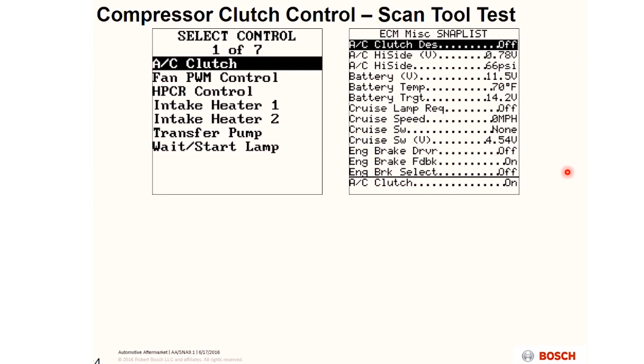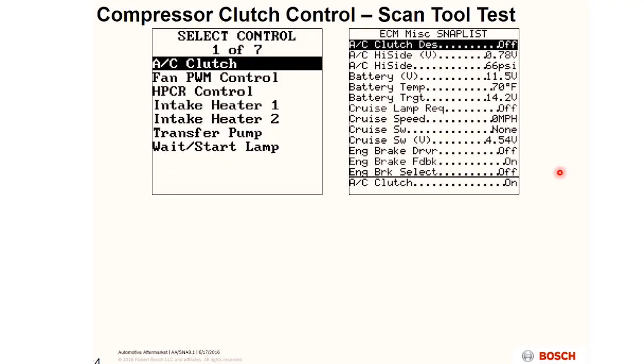A lot of times what you can do with your bidirectional control is listen for things. The AC clutch is generally a pretty easy one — I go find the bidirectional control, I command the AC clutch on, and then I listen: did I hear it click? In this particular case, the position is on, and then I would go out there for my pinpoint testing or listening to hear it click on and off. Quick and easy.